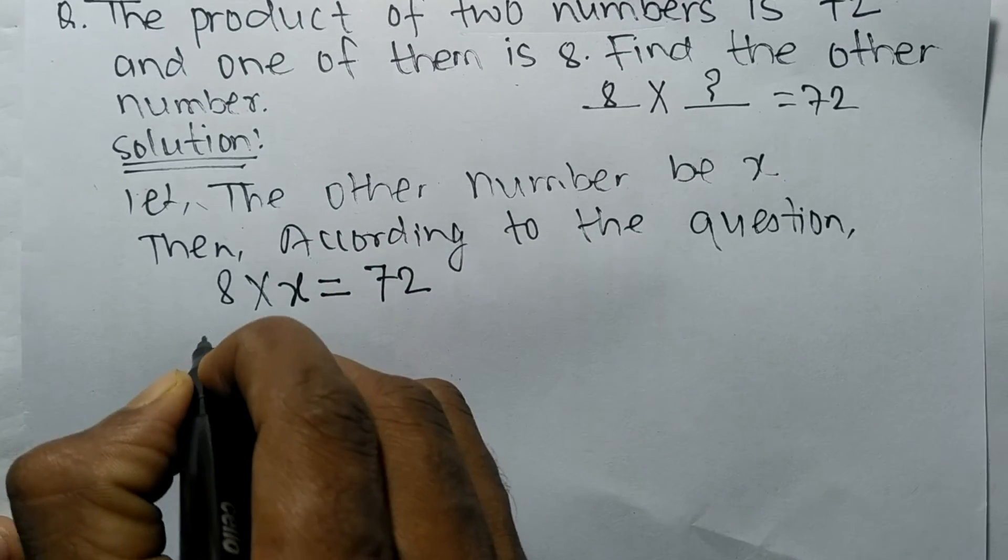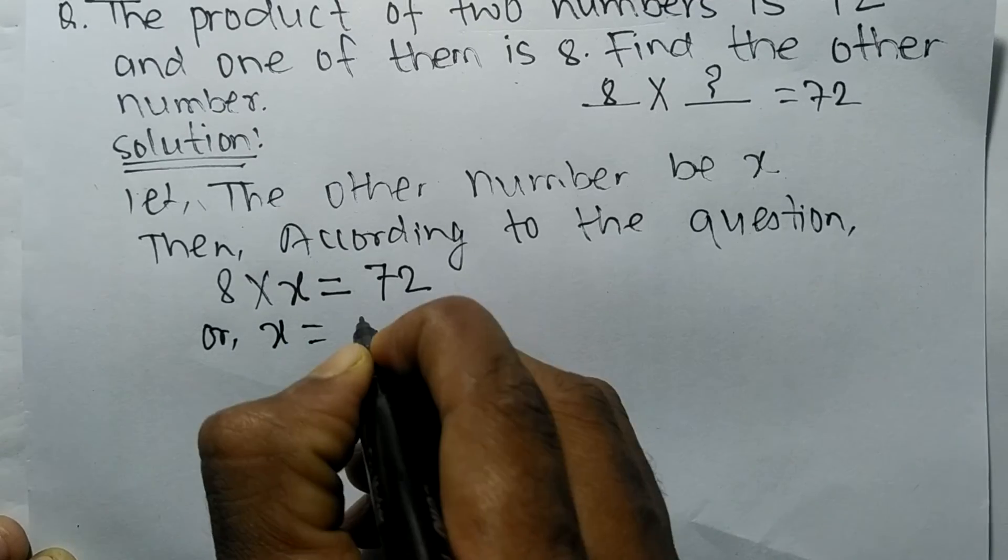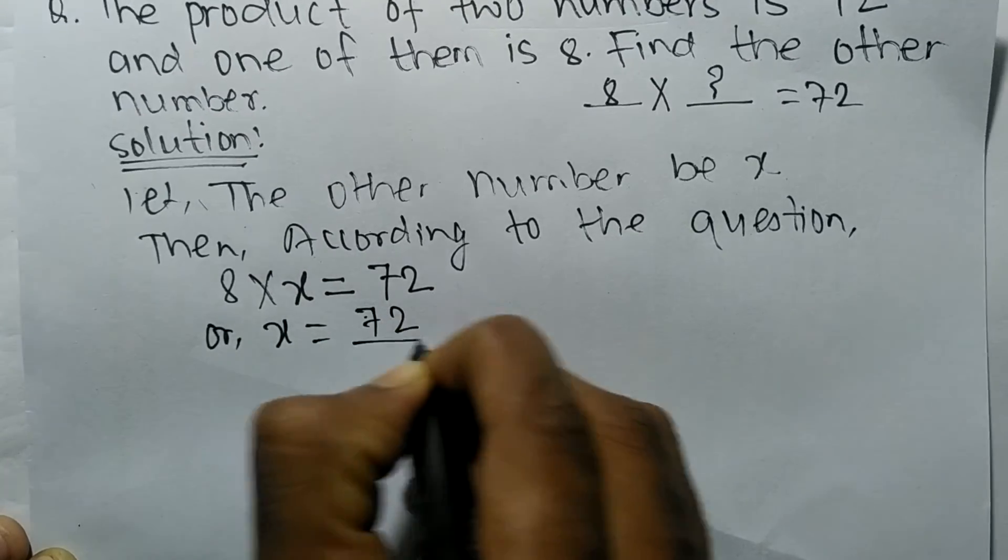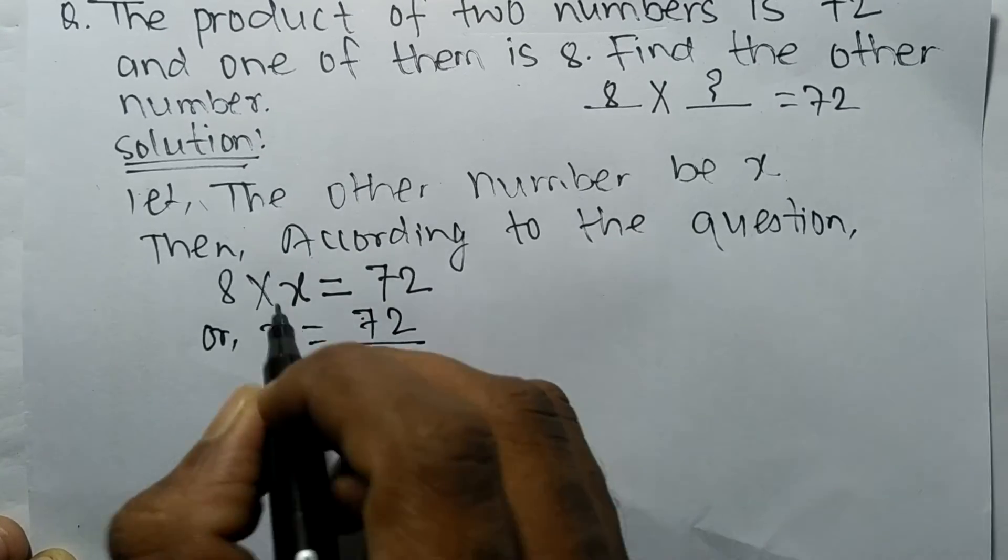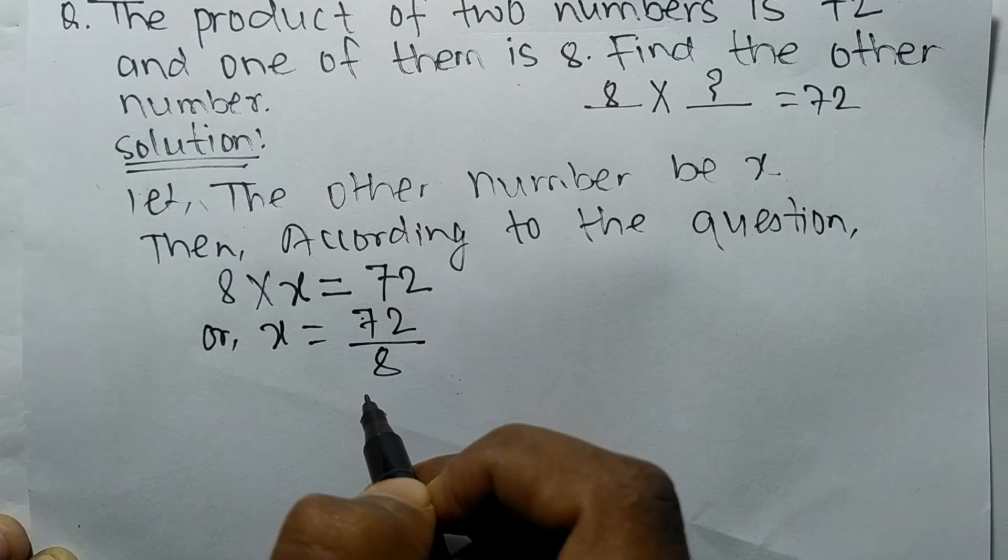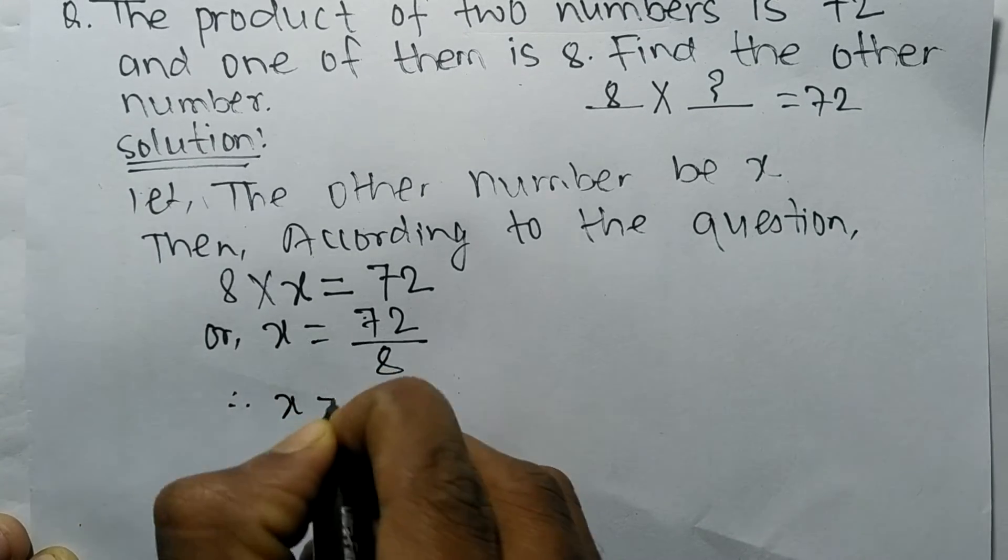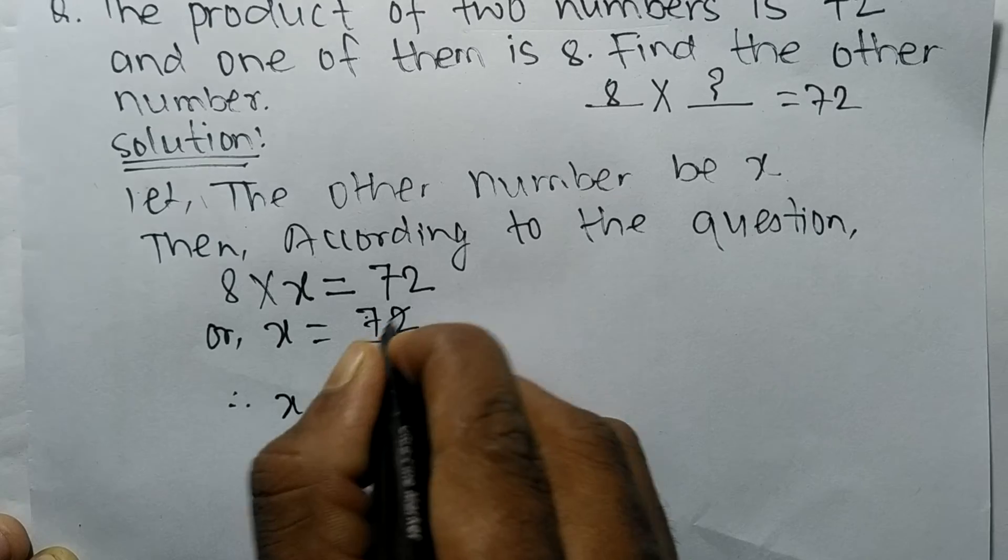Now solving it we get x is equal to 72 by 8. Because 8 here is in multiplication, when it moves to the opposite side it becomes divide. Therefore x is equal to, 8 times 9 means 72, it is 9.